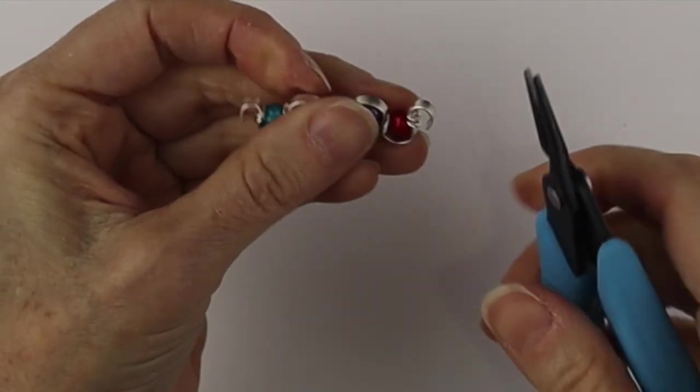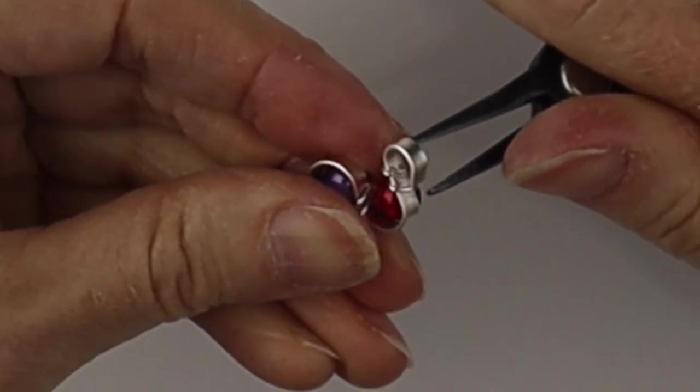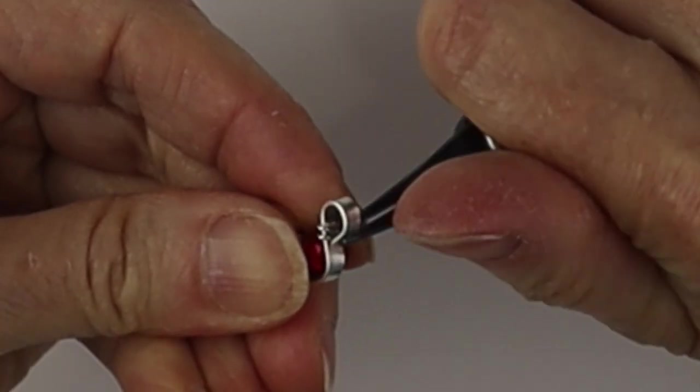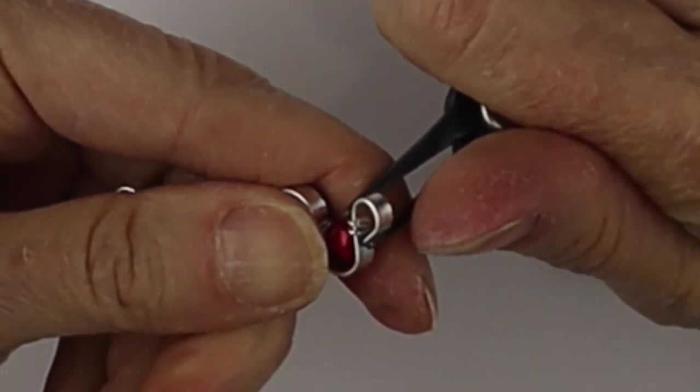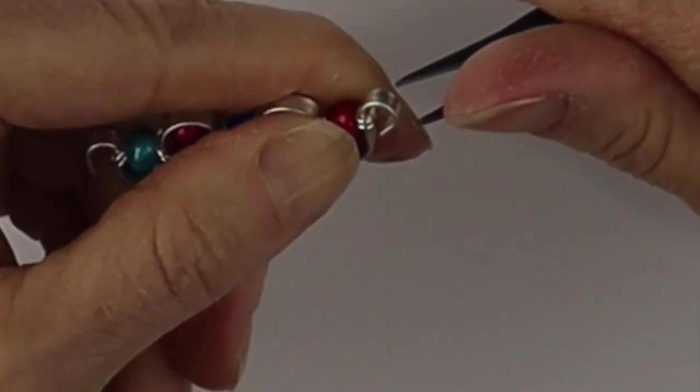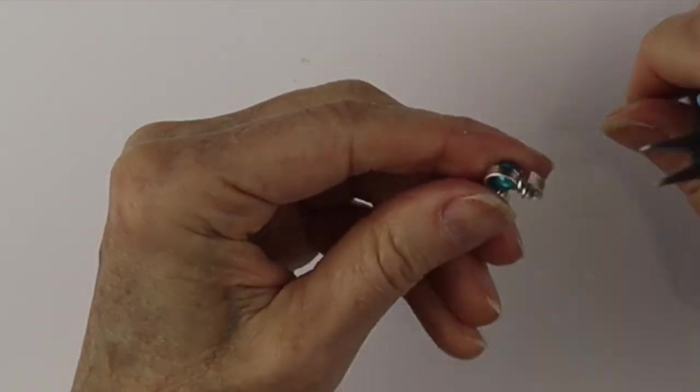We're going to pinch the wires in place with our tweezer nose pliers and then we're going to pinch them together so they're nice and discreet underneath the loop. Make sure they're nice and hidden there and then we're going to close up that gap in the loop.